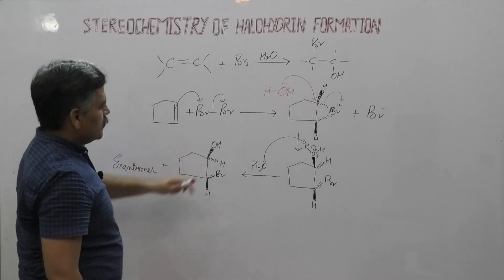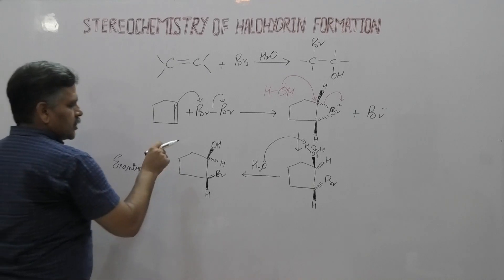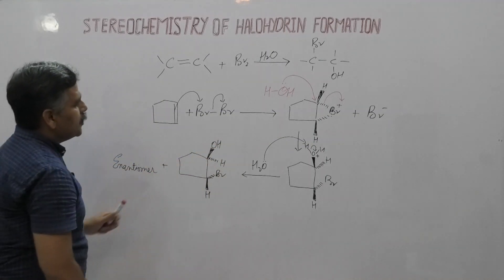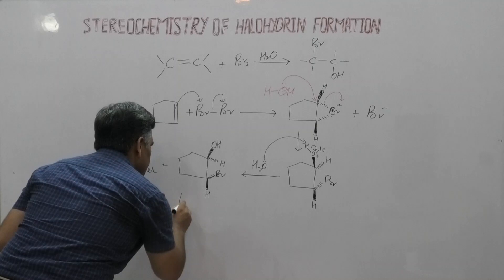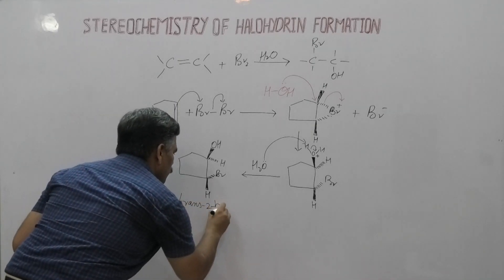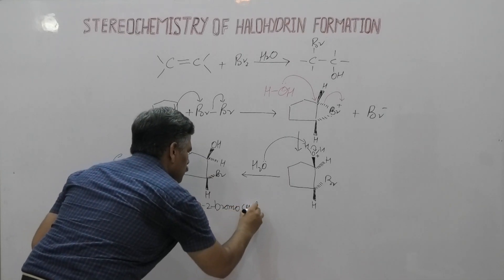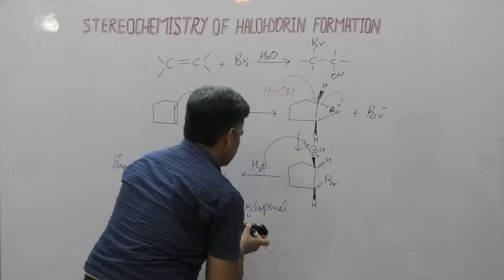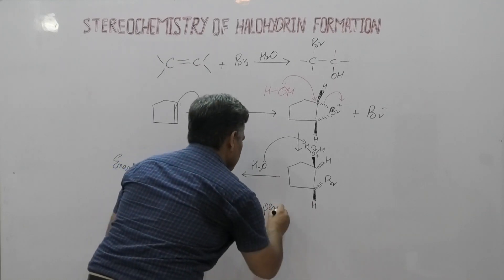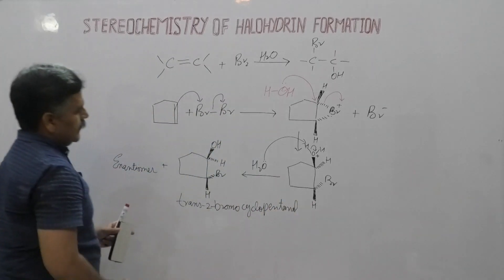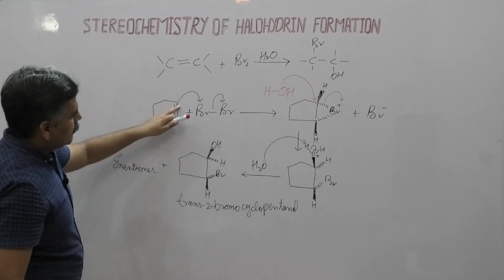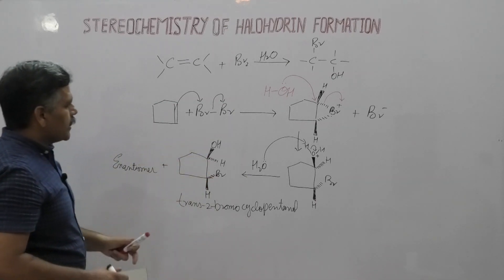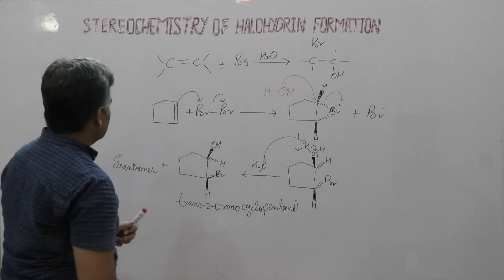So here we have OH here, hydrogen here, Br here, and hydrogen here, plus the enantiomer. When you change the position of hydroxyl and Br, you get another enantiomer. This compound has trans orientation of this Br and OH on cyclopentane. So the name of this compound is trans-2-bromocyclopentanol. It means hydroxyl and Br attach at this carbon-carbon double bond, and this attachment is anti-addition because both hydroxyl and Br attach on opposite sides of this carbon-carbon bond.